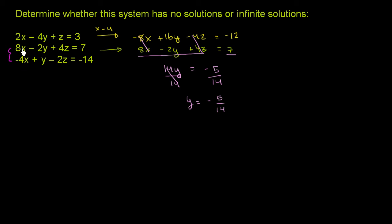So let's use these second two constraints. We can eliminate the x here if we keep the first equation the same and we multiply the second equation by 2, because this will become a negative 8x, which we'll eliminate. So our first equation is just 8x minus 2y plus 4z is equal to 7.